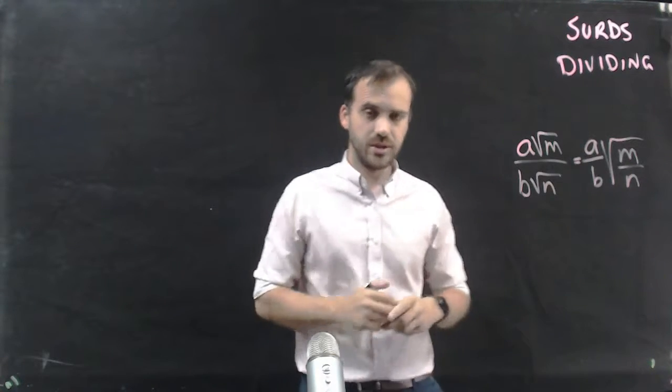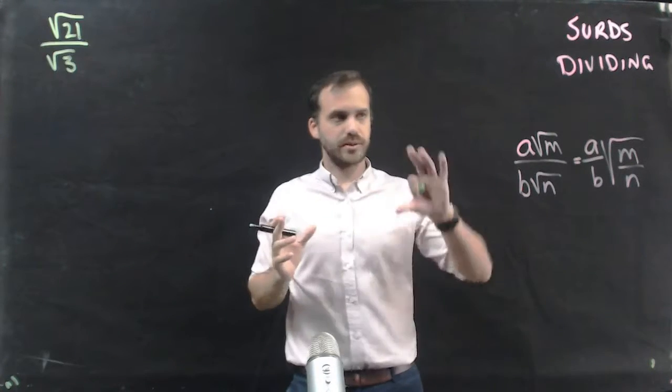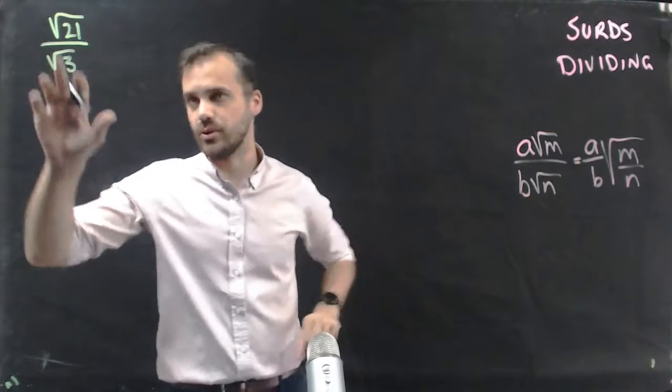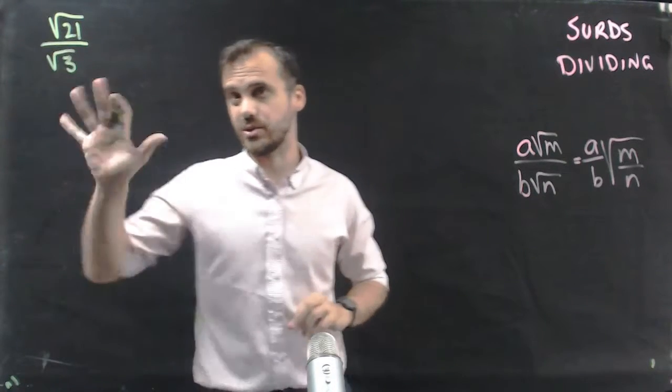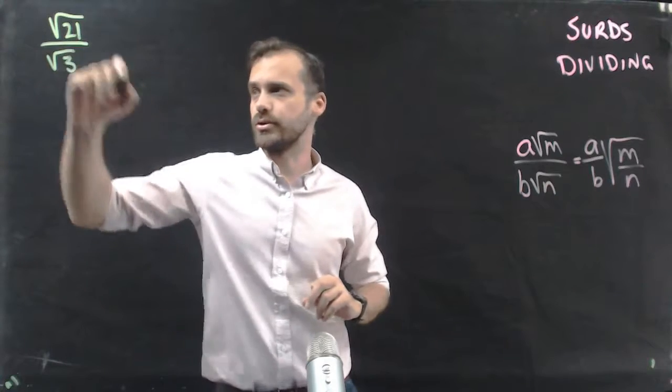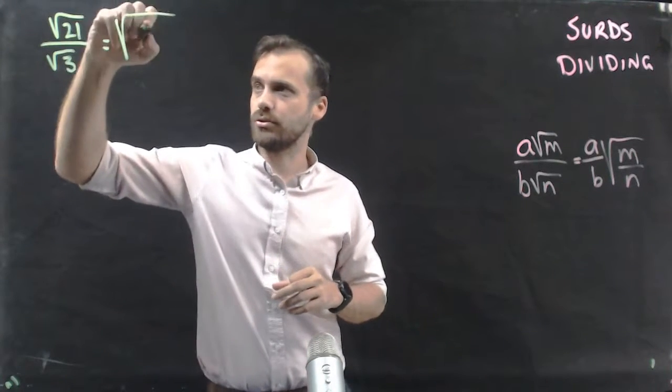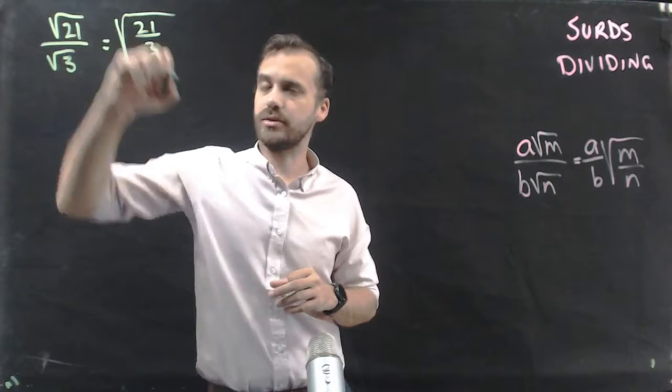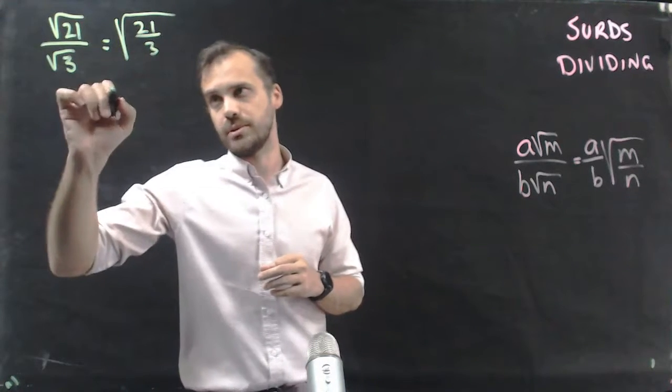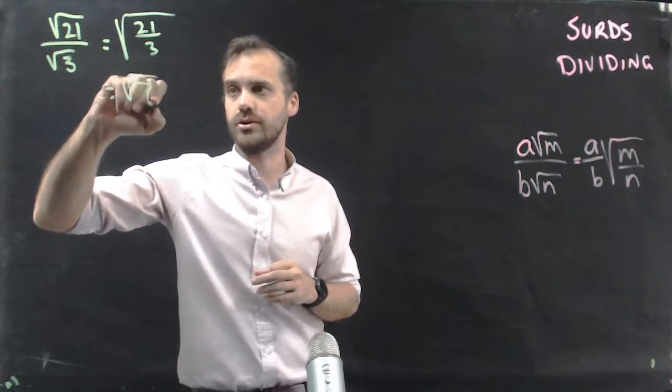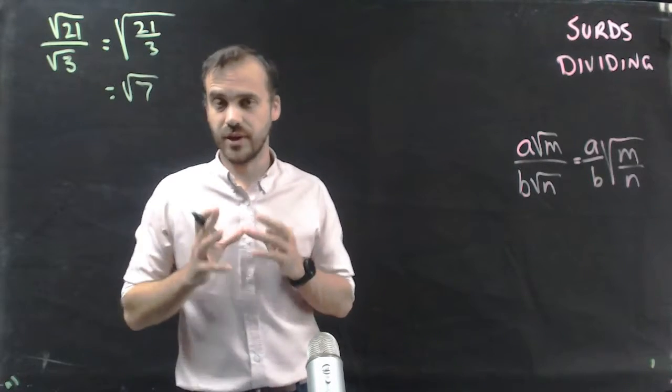So let's jump straight into it and have a couple of examples. First one, no a and b in this one, or a and b are equal to 1, so we can sort of ignore them. √21 divided by √3, that's going to be equal to √(21/3), which is equal to √7. Very simple.